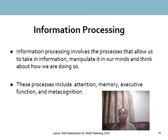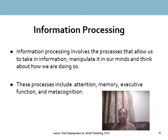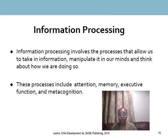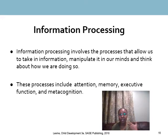Information processing is one of the major contemporary approaches to studying cognitive development. It's a more concise framework supported by extensive research, though it doesn't fit neatly into a single theoretical framework like the others. When we talk about information processing, we're talking about how we manipulate information within our minds — this includes working with attention, memory, levels of executive function, and metacognition.